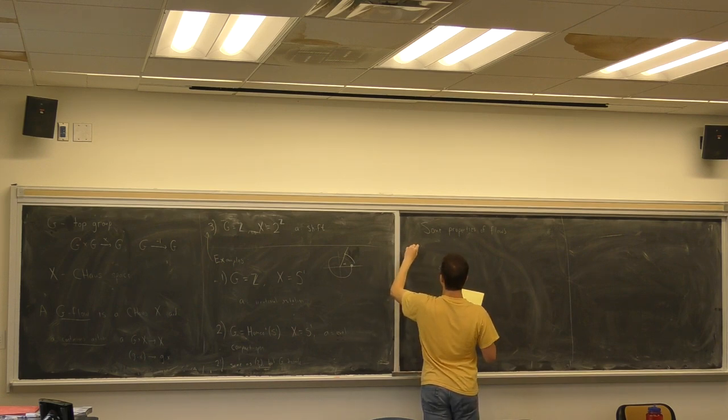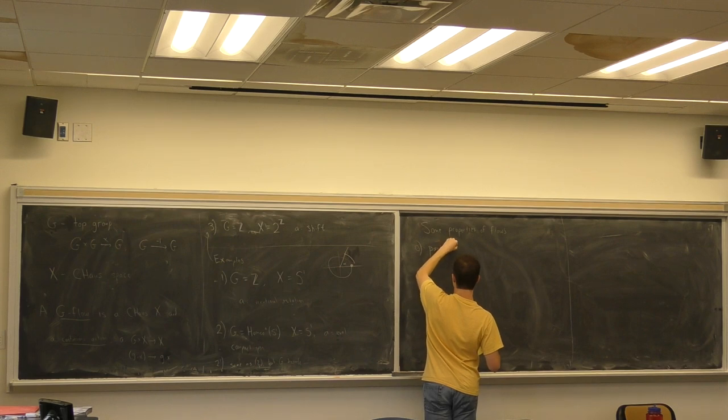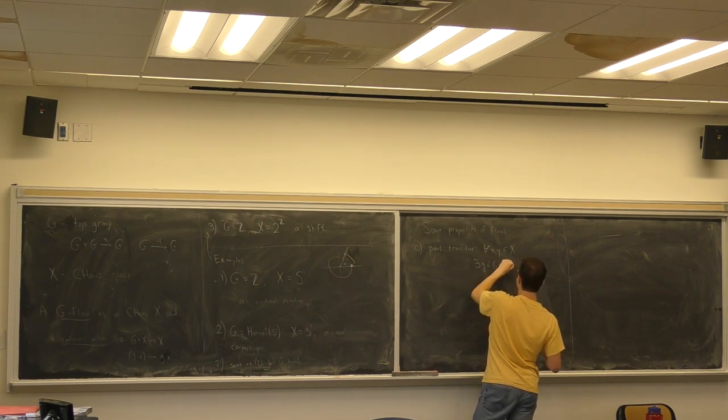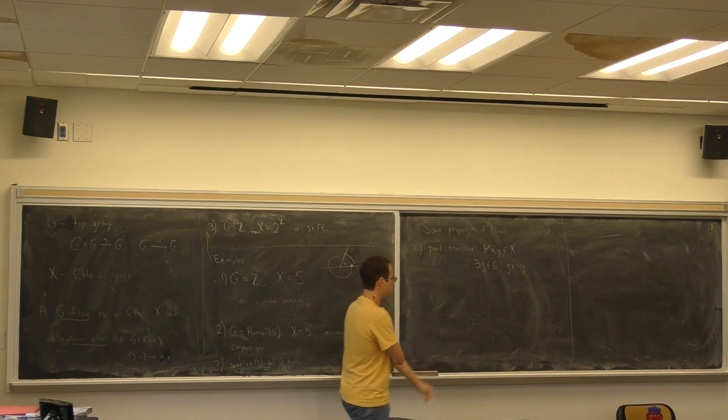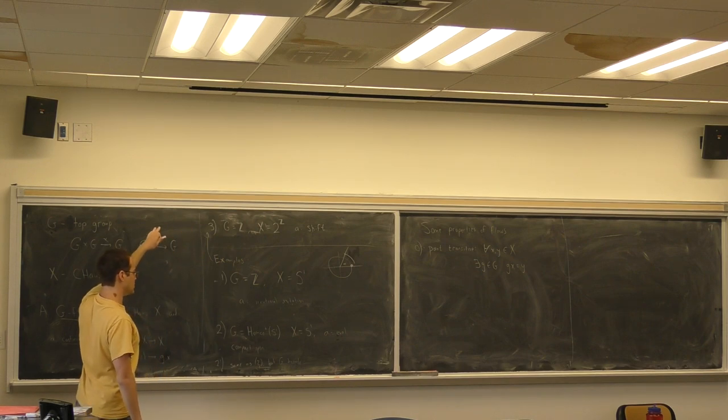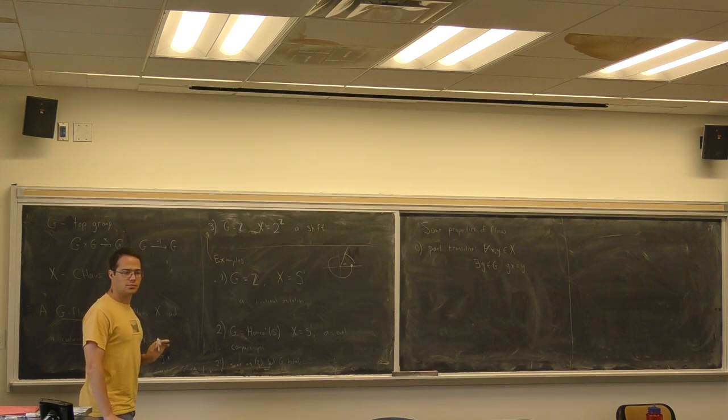I'll call this a zero. Cause it's pretty rare. Point transitive. This means that for any pair of points, there is a group element sending one to another. So let's think. Which of these four examples, who can tell me which ones are point transitive?